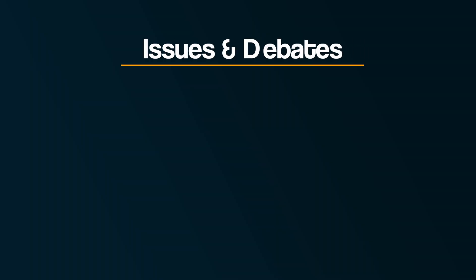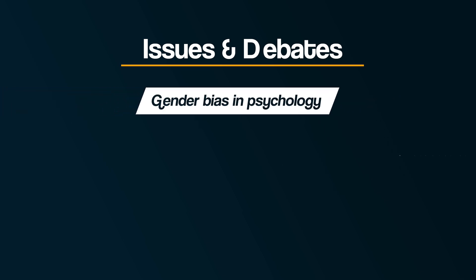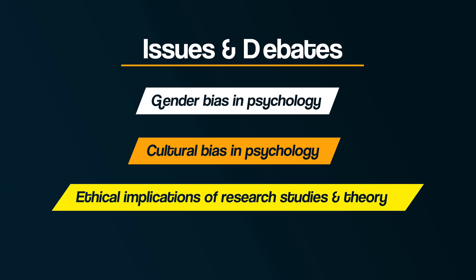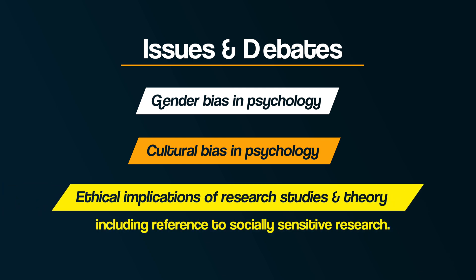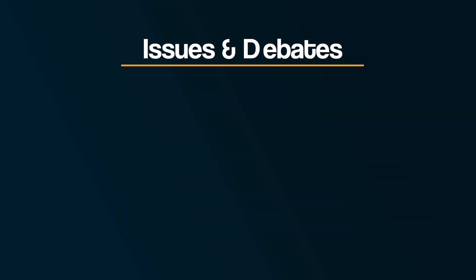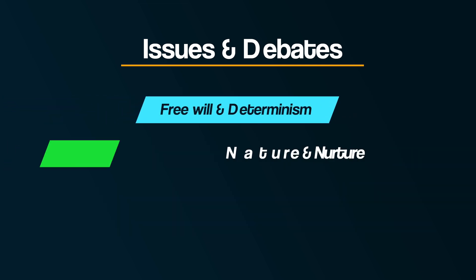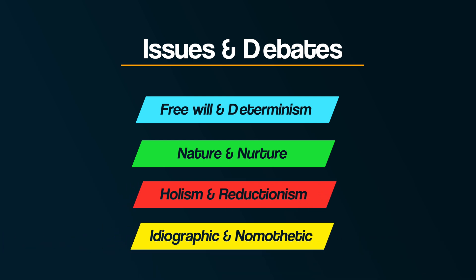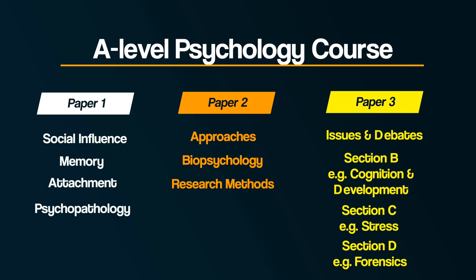This topic is broken down into three issues and four debates. The three issues are gender bias in psychology, cultural bias in psychology, and ethical implications of research studies and theories, including reference to socially sensitive research. The debates include free will and determinism, nature and nurture, holism and reductionism, and idiographic and nomothetic approaches. Key to the topic of issues and debates is to use your knowledge of psychology from different parts of the course to illustrate and discuss the issues and debates.